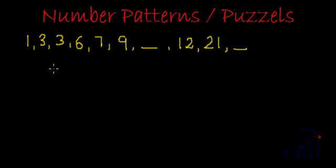Let's find the differences between two consecutive terms. The difference between 3 and 1 is 2. 3 and 3 is 0. Here the difference is 3 and here the difference is 4. Here difference is again 2.